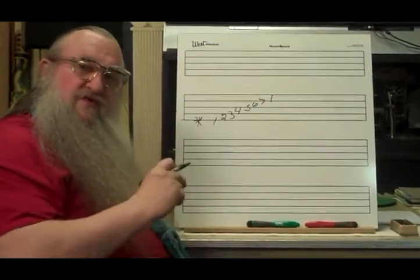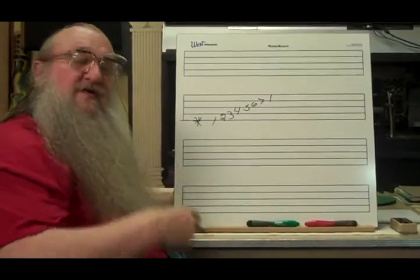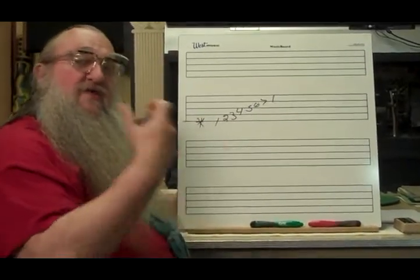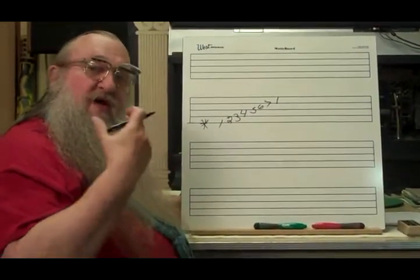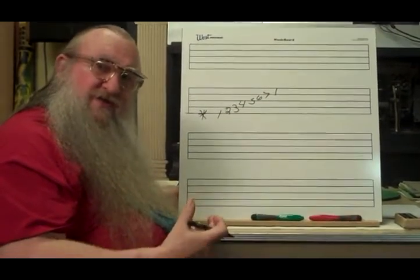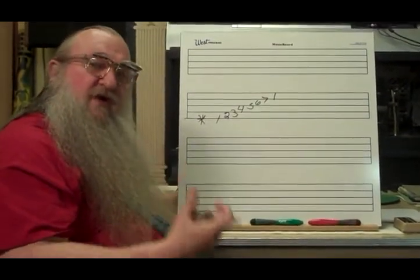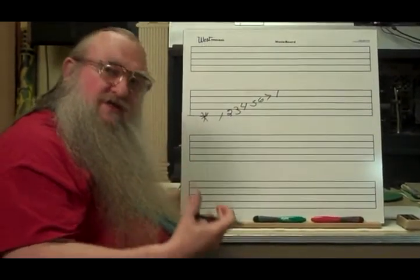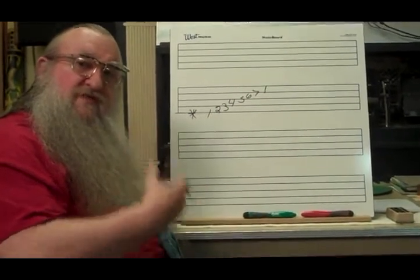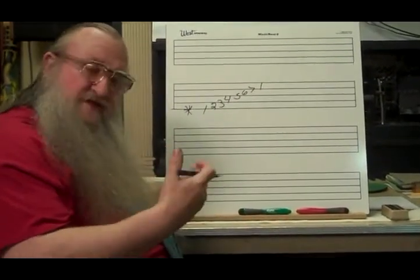Everybody writes one, two, three, four, five, six, seven, eight. Eight is the word for octave, which means eight notes away. But the Do-Re-Mi scale doesn't have an eight. The number eight is still the number one. So since the pattern goes one, two, three, four, five, six, seven, one, two, three, four, five, six, seven, one — that's it.